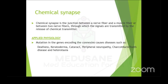Applied physiology: mutations in the gene encoding for connexins cause diseases such as deafness, keratoderma (thickening of skin on palms and soles), cataract (opacity of the lens), peripheral neuropathy (damage to nerves of the peripheral nervous system), Charcot-Marie-Tooth disease (a form of neuropathy), and heterotaxia (abnormal arrangement of organs relative to left-right symmetry). These all result when gap junctions are not properly formed.